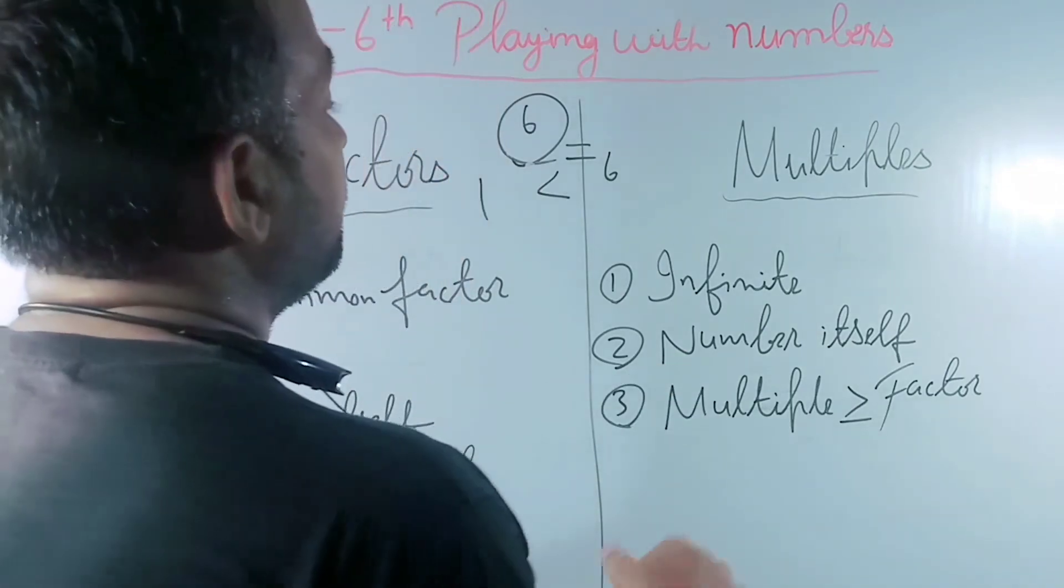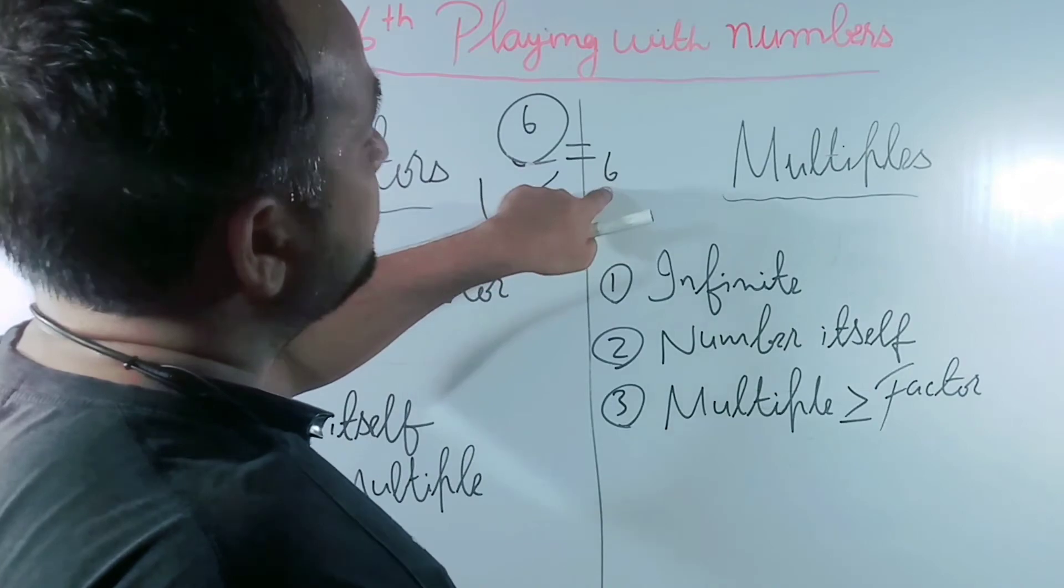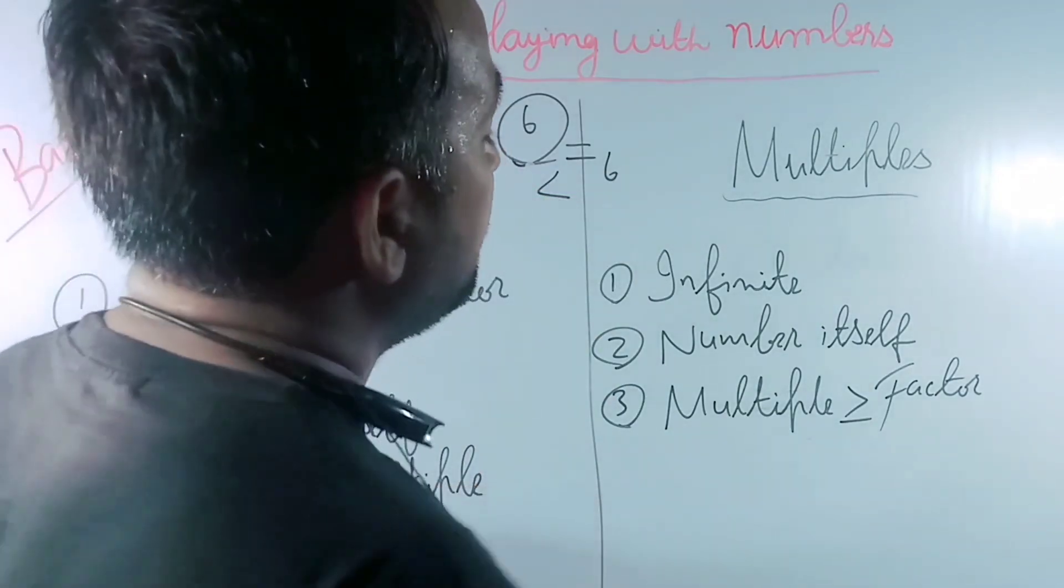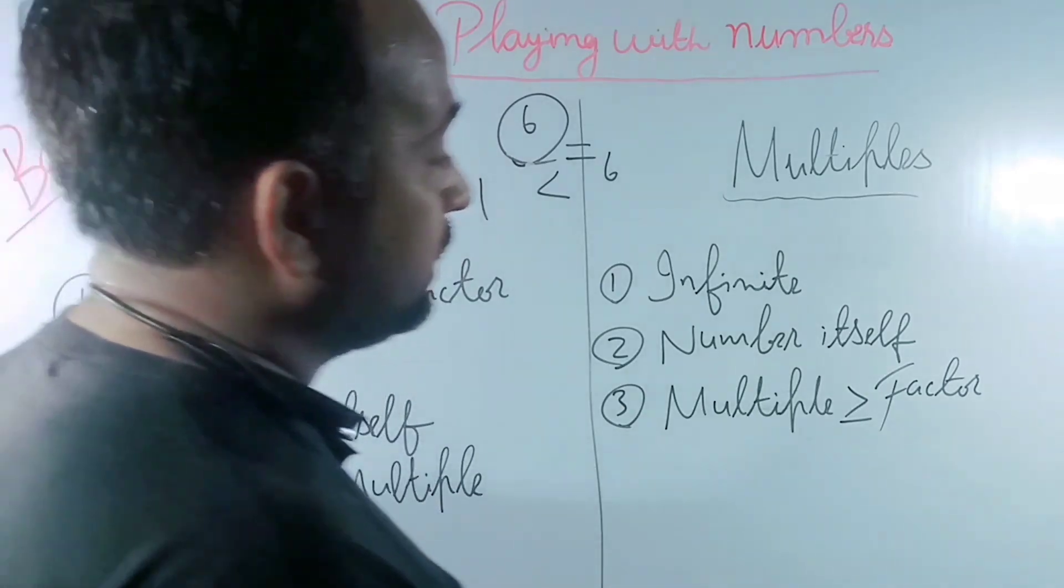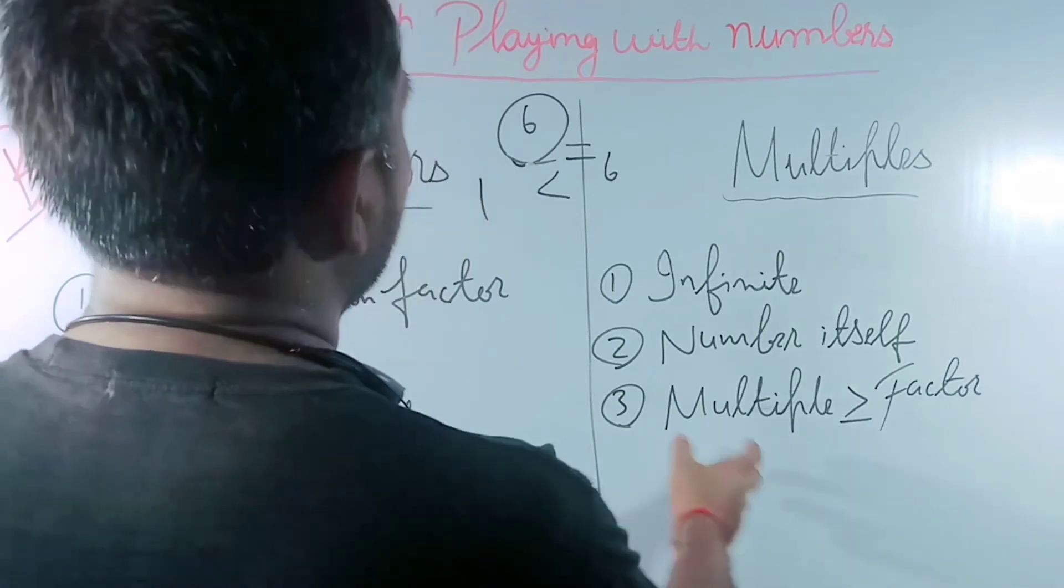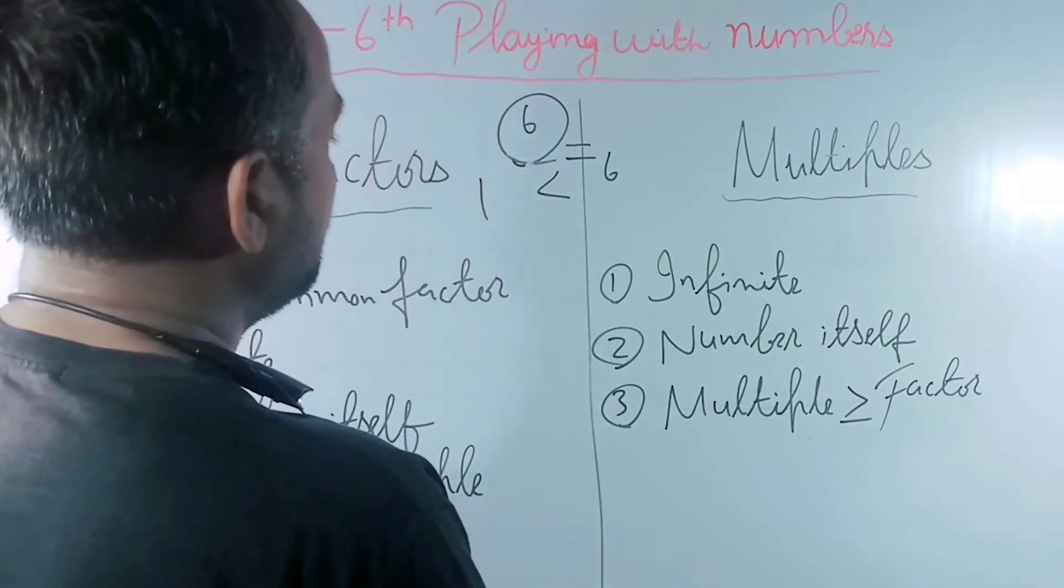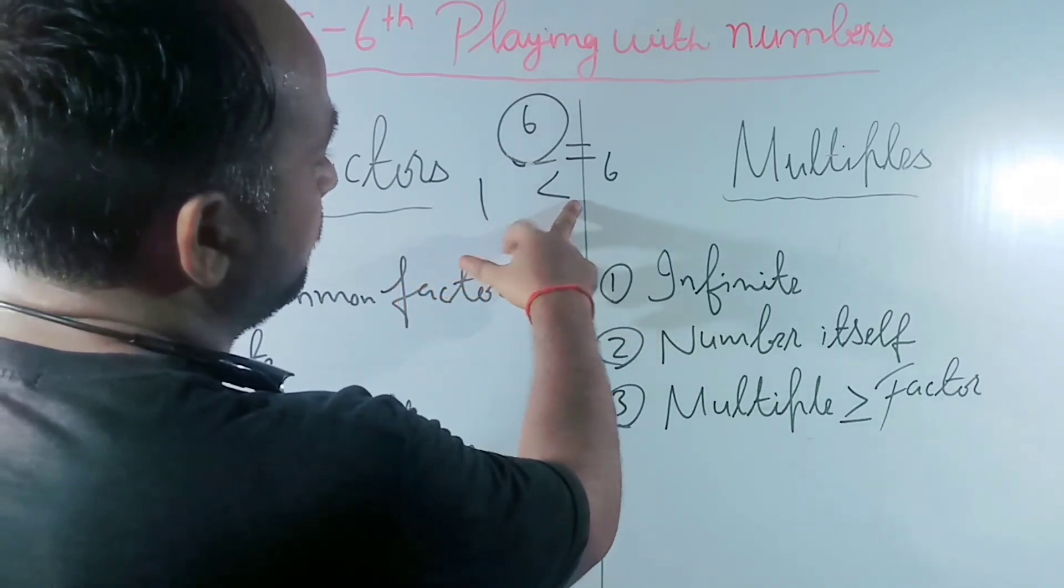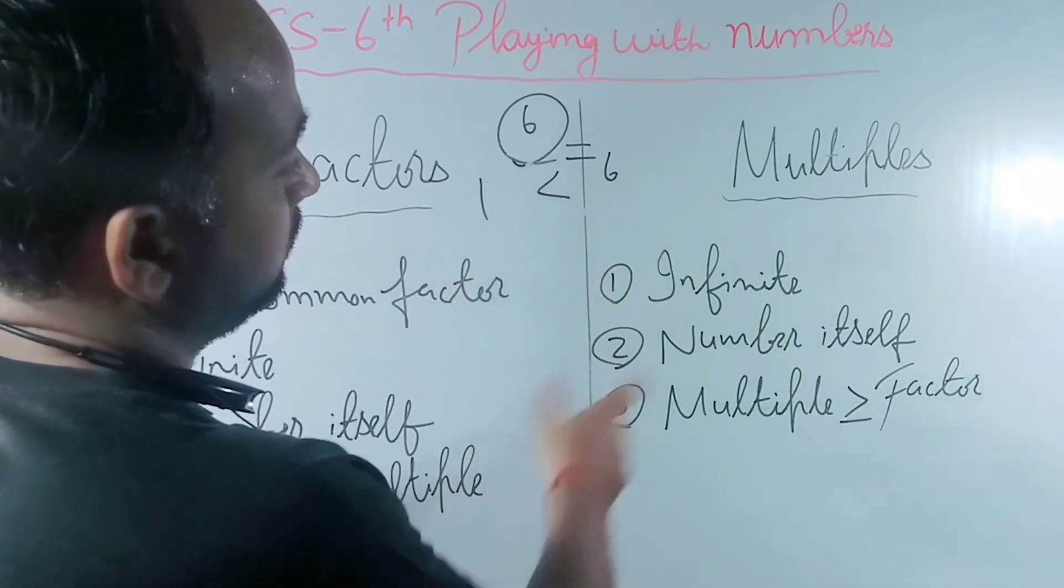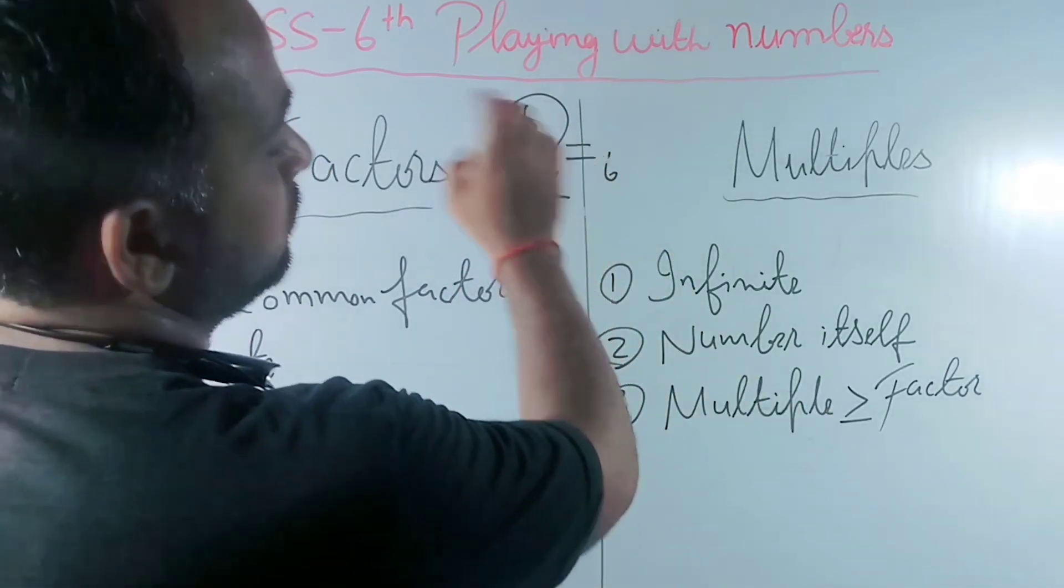Multiple means number itself is a multiple. Number itself is a multiple. Multiple is greater than or equal to factor.